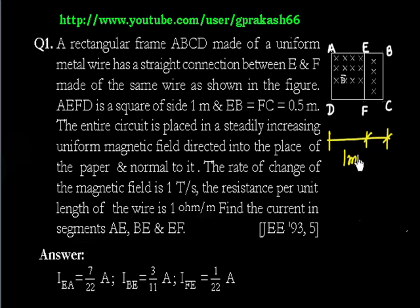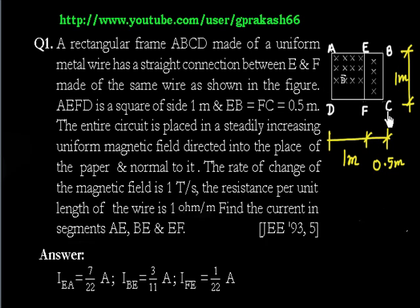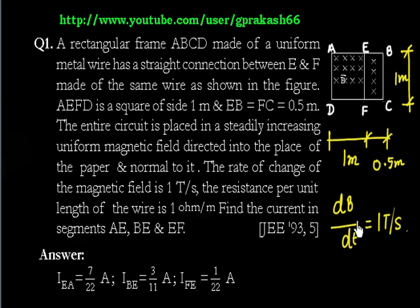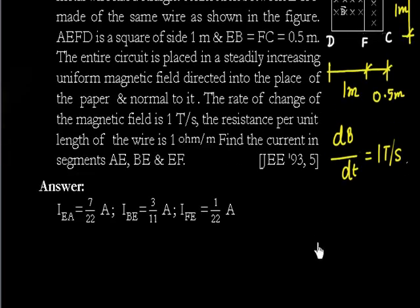This length is 1 meter and this length is 0.5 meter, and since AEFD is a square, this length is again 1 meter. The entire loop is placed in a magnetic field that is increasing at a rate of dB/dt = 1 tesla per second. Each wire segment has a resistance per unit length lambda = 1 ohm per meter.